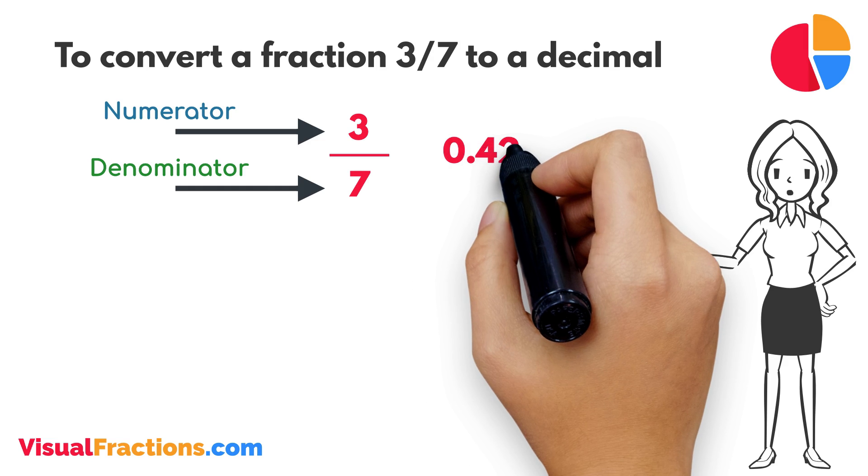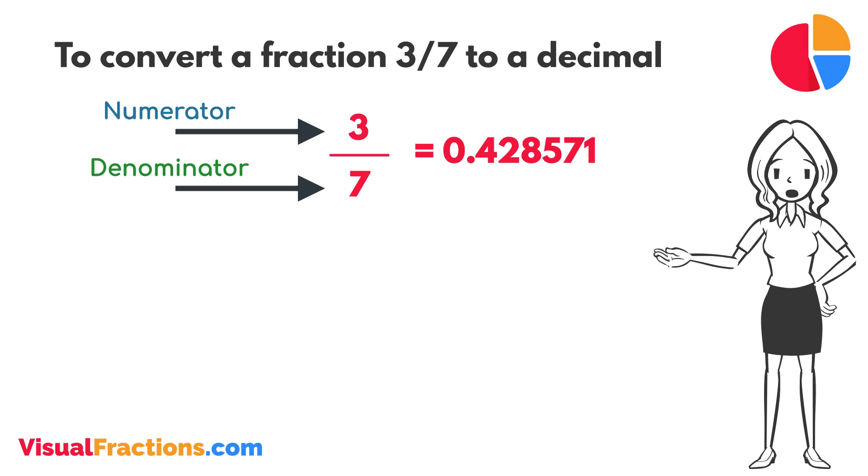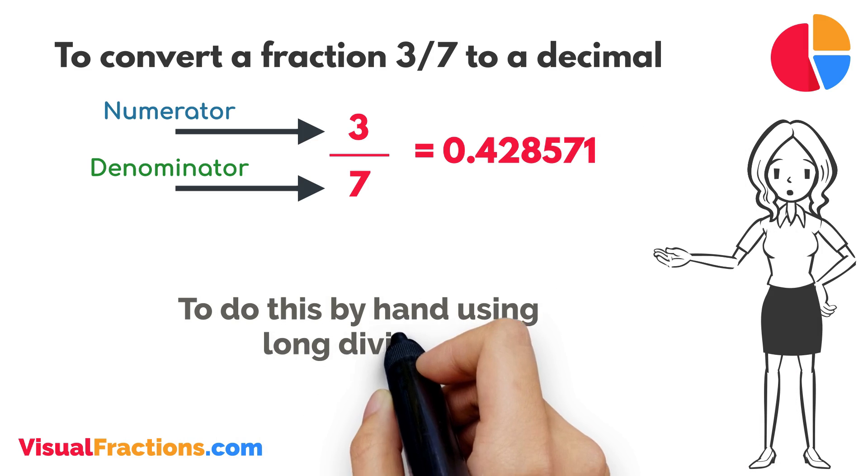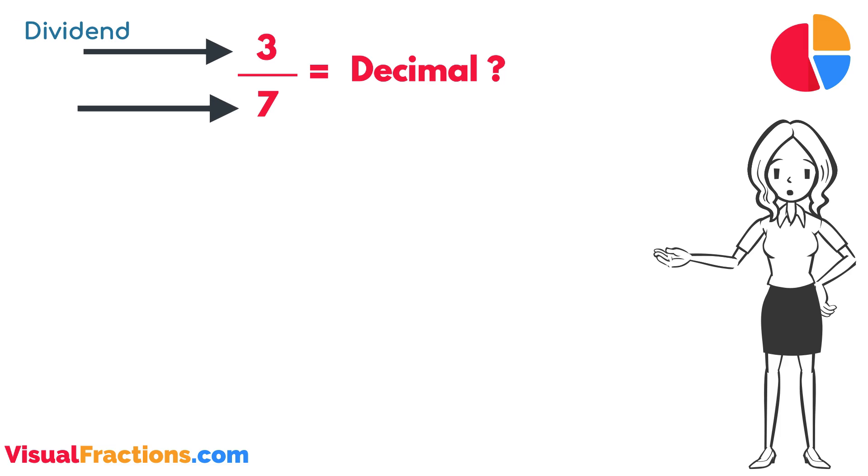The answer we get is approximately 0.428571. To do this by hand using long division, we start by writing three as the dividend and seven as the divisor. Since seven doesn't fit into three, we add a decimal point in our answer and append a zero to three, making it 30.